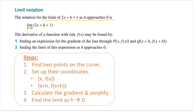The derivative of a function with rule f(x) may be found by following these steps. I've summarized four steps. The first step is to find two points on the curve, because using the gradient formula m = (y2 - y1)/(x2 - x1) we always need two points. The second step is to set up their coordinates. The third step is to calculate the gradient and simplify. And last, we find the limit as h approaches zero.